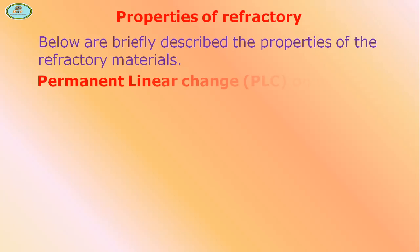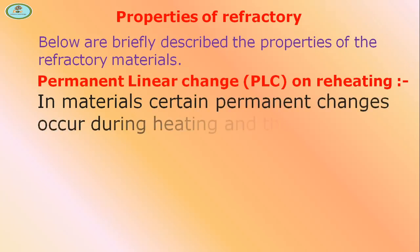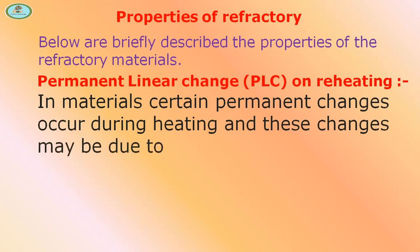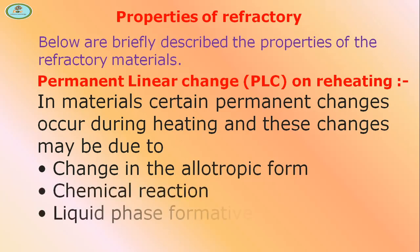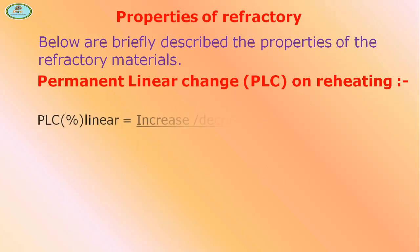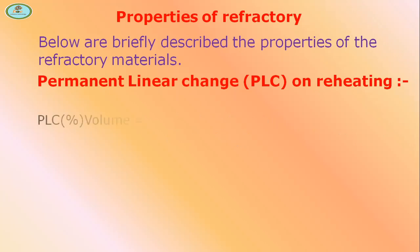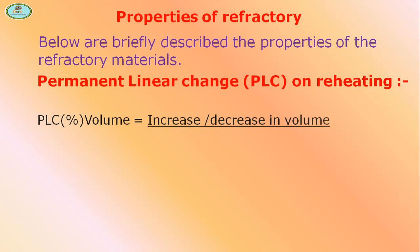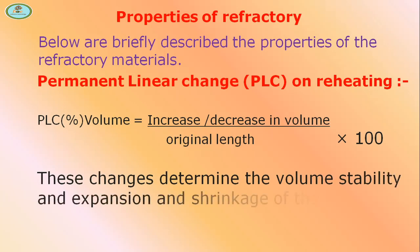Permanent Linear Change (PLC): in certain materials, permanent changes occur during heating due to changes in allotropic form, chemical reactions, liquid phase formation, and sintering reactions. PLC percentage linear is equal to the increase or decrease in length divided by original length, multiplied by 100. PLC percentage volume is equal to the increase or decrease in volume divided by original volume, multiplied by 100. These changes determine volume stability and expansion variation.